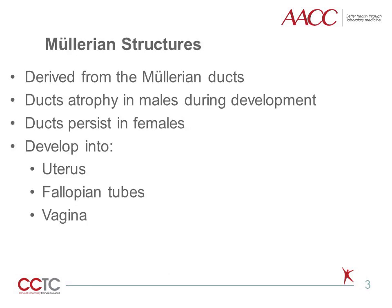Why is it called anti-mullerian hormone? AMH gets its name from its relationship to mullerian structures. Mullerian structures are, as their name suggests, structures derived from the mullerian ducts in the course of development. In males, the mullerian ducts atrophy. In females, the ducts persist and go on to form the uterus, fallopian tube, and vagina.